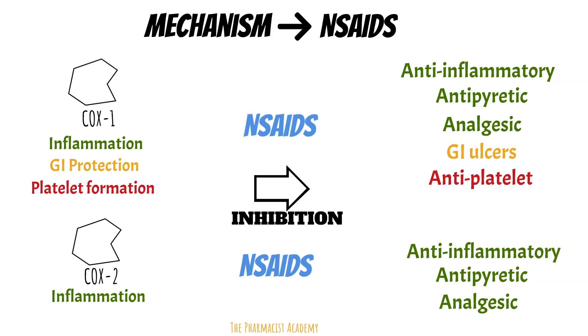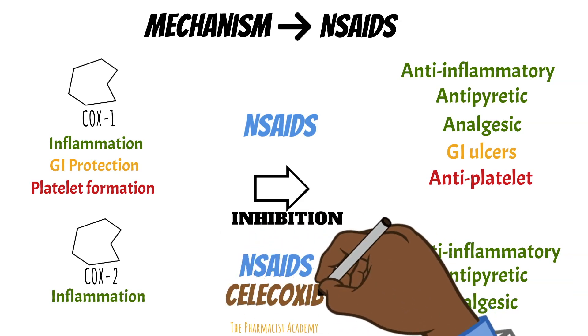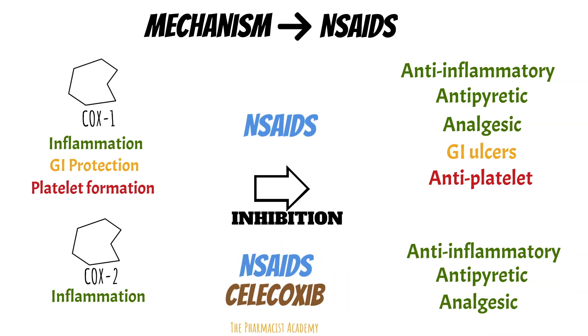There are also selective COX-2 inhibitors like Celebrex. The selling point for these agents when released is that since they do not inhibit the COX-1 enzyme, they will not carry the risk of gastric ulcers.